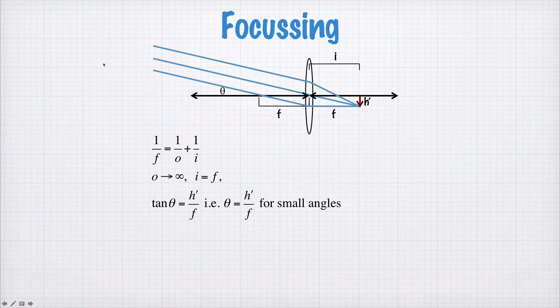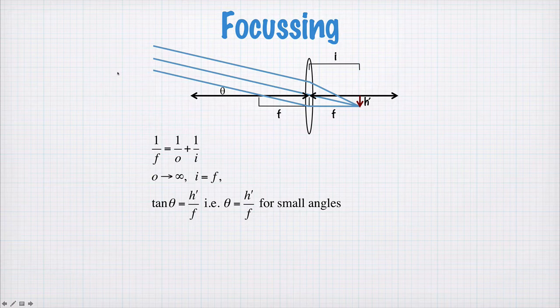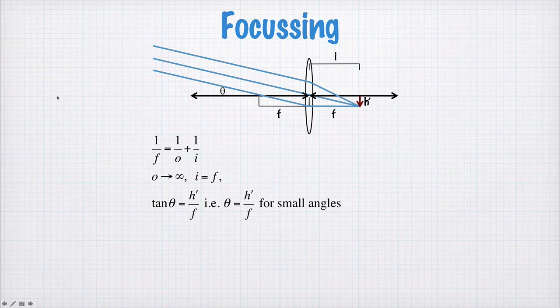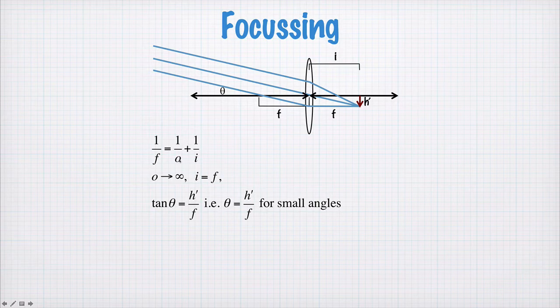Focusing first. So for focusing to a point, we're going to think of light coming from some distant object, like a star. So the object distance is basically well approximated by something close to infinity. In this case, 1 divided by the object distance we can ignore, this goes to 0,